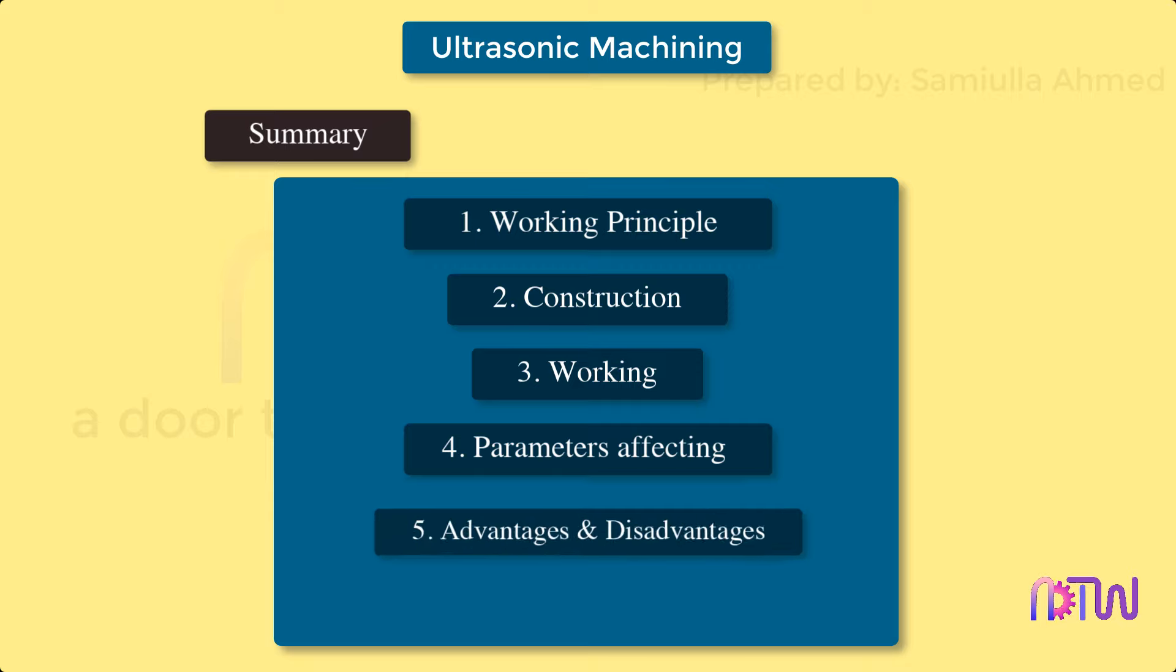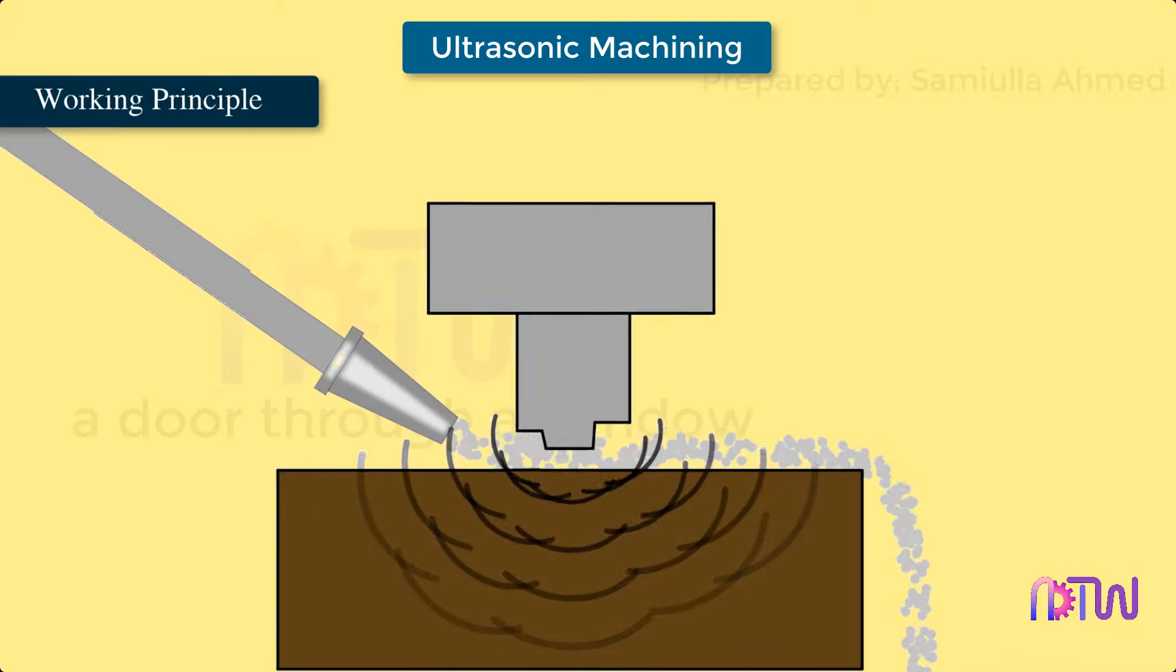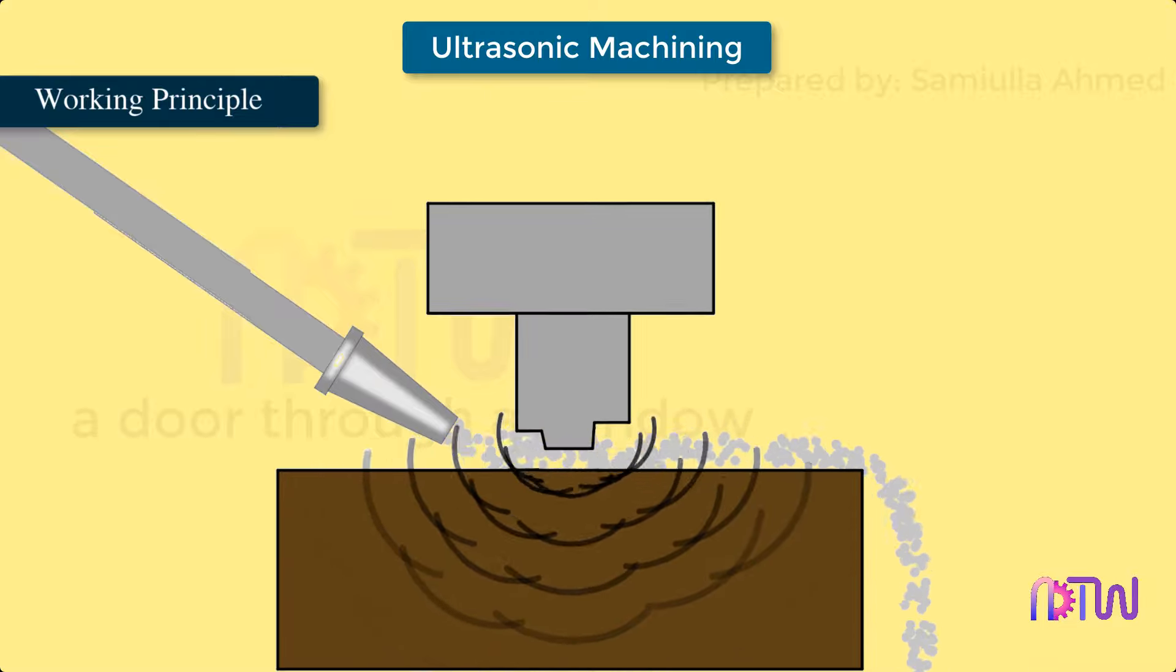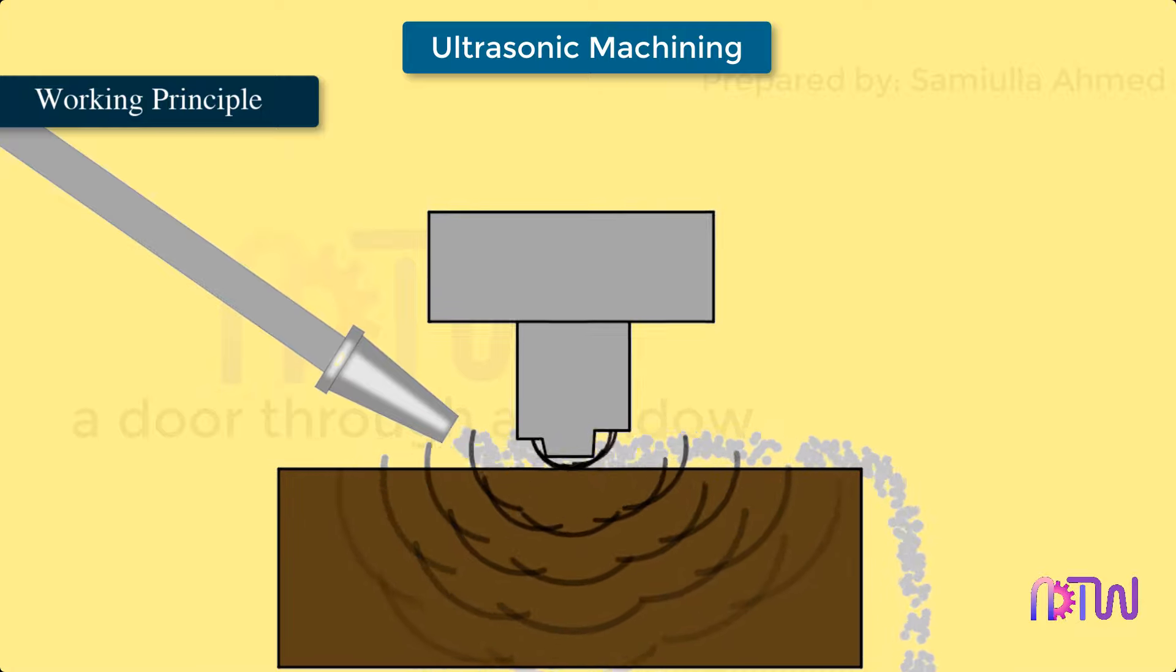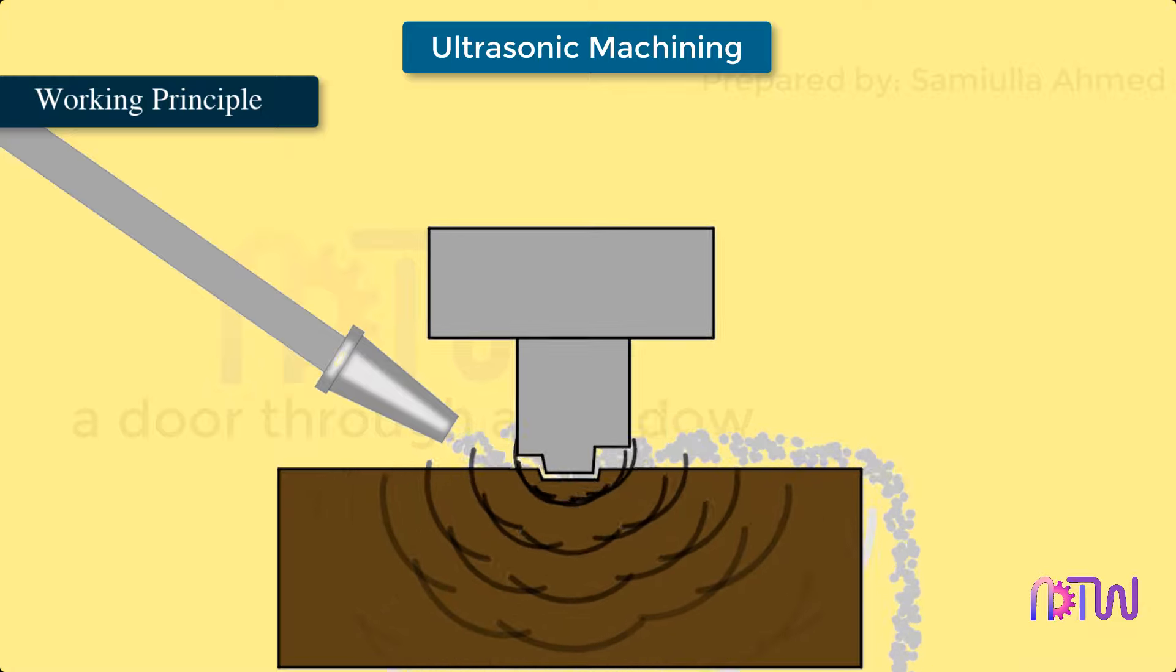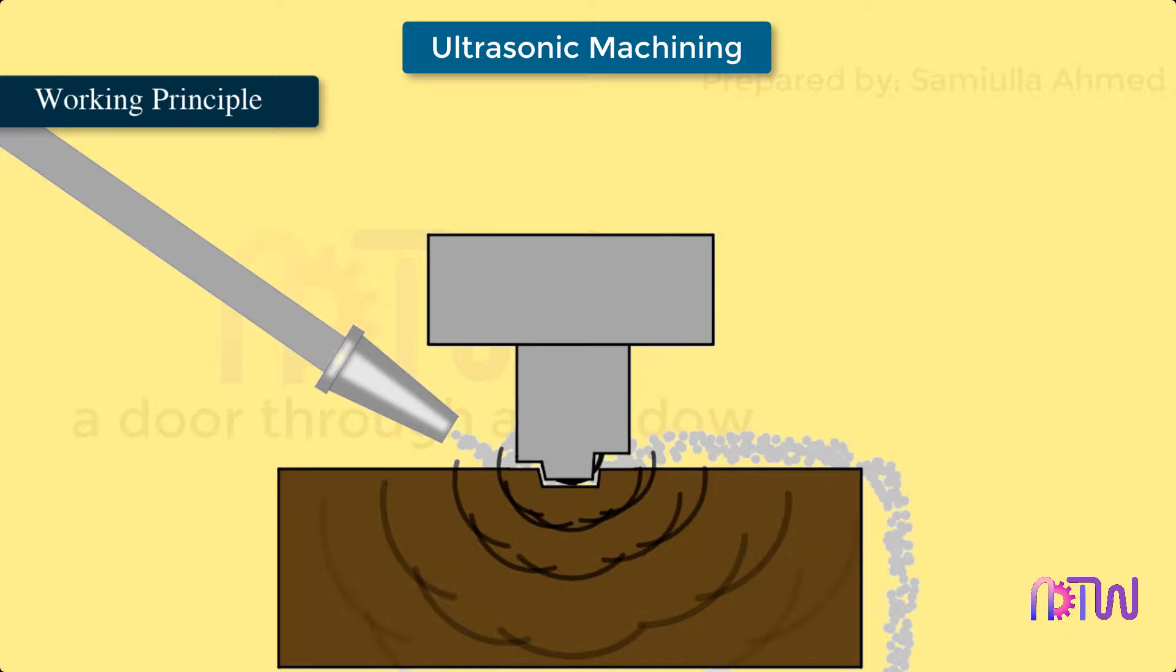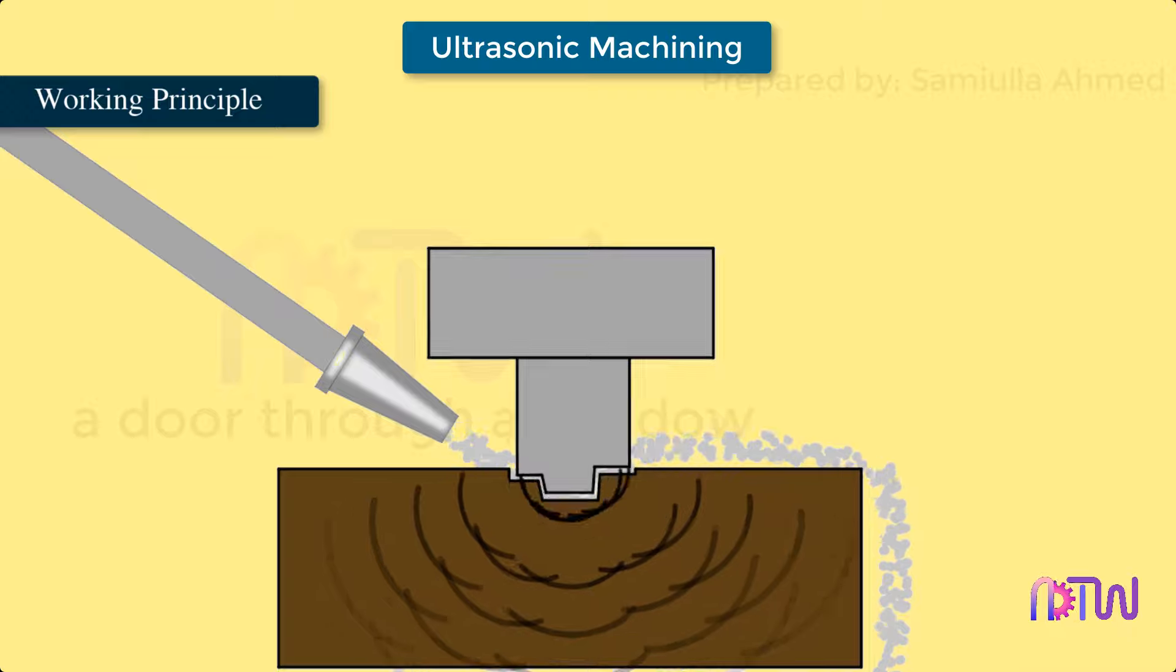Working principle: The transducer produces vibration of the tool tip which is of the same shape as the cavity to be generated on the material. As the tool vibrates it is pressed lightly on the work surface as abrasive slurry is supplied between the tool tip and workpiece interface. The high kinetic energy of vibration is transmitted to these abrasive particles. As these particles impinge the workpiece surface, material is removed through abrasion at microscopic level.